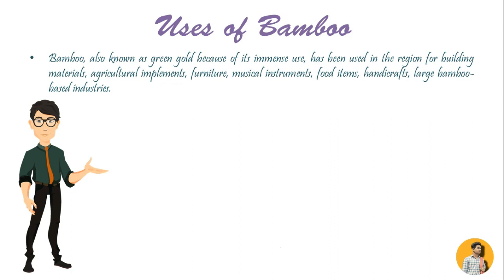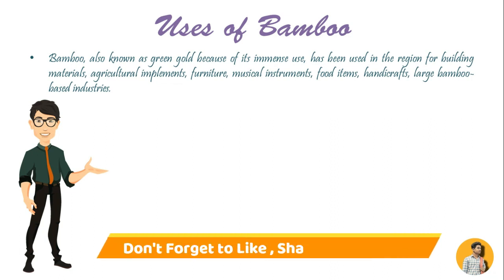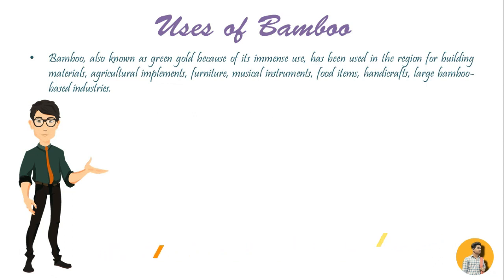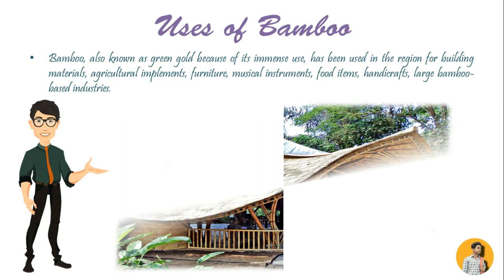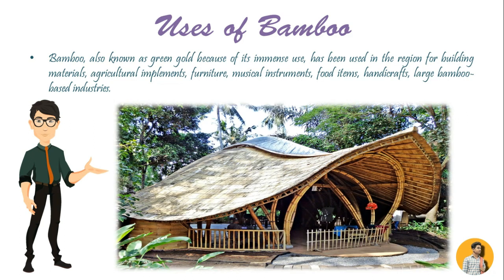Bamboo has been used for agricultural implements, furniture, musical instruments, food items, handicrafts, and large bamboo-based industries. Canes are beautifully exposed and they can be cut in such a way to be recombined into useful products such as flooring, wall cladding and roof covering.